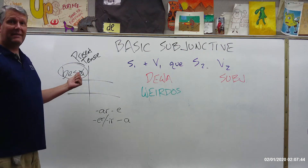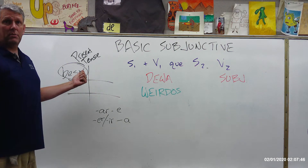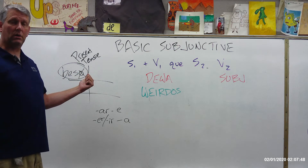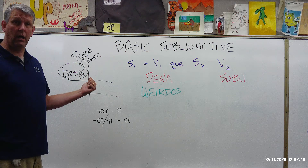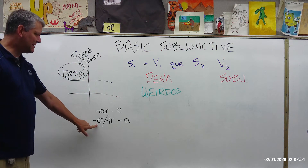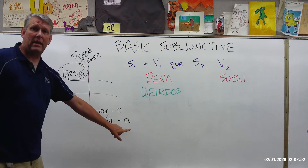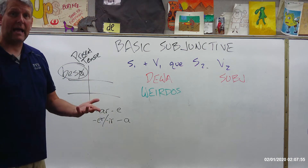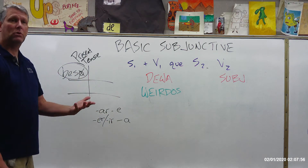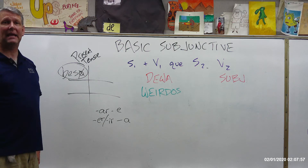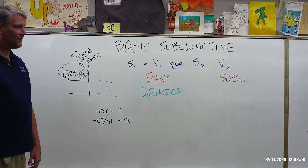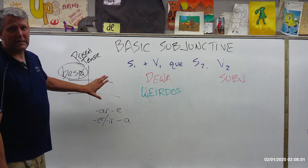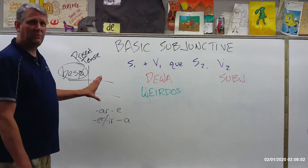So we're switching the vowels. With a verb like tener, be careful. The yo form is tengo; you drop the O, you're left with teng. And because that's an ER verb, now we add the opposite vowel: tenga, tengas, tenga, tengamos, tengáis, and tengan. Now, there are some irregular, tricky verbs in there — that's for a little bit later.